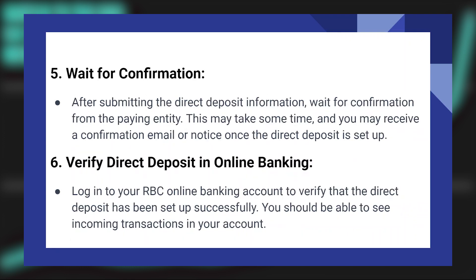After submitting the direct deposit information, wait for confirmation from the paying entity. This may take some time, and you may receive a confirmation email or notice once the direct deposit is set up. Now log into your RBC online banking account to verify that the direct deposit has been set up successfully. You should be able to see incoming transactions in your account.